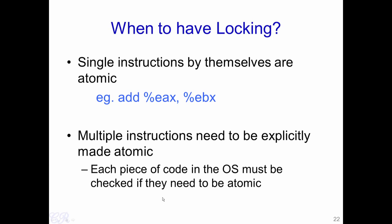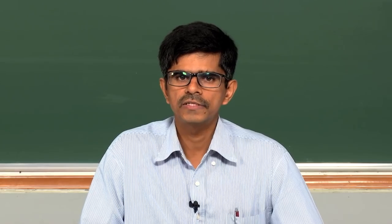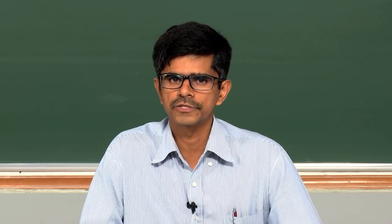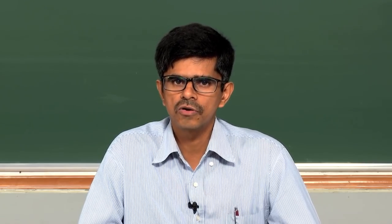The use of lock and unlock constructs ensures that the critical section is atomic. Single instructions by themselves are atomic — for example, adding EAX to EBX does not require explicit locking. However, multiple instructions in a sequence that need to be made atomic do require explicit locking and unlocking. Each piece of code in the operating system must be checked to determine if it needs to be made atomic, particularly things involving interrupt handlers. In the next video we will see how such locking and unlocking mechanisms are implemented in systems.